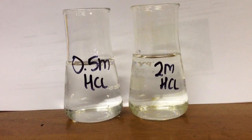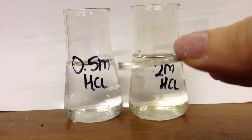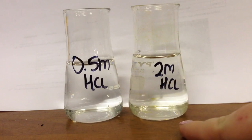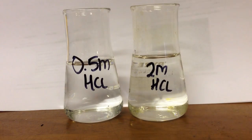So in this video, I'm going to show you the reaction between magnesium ribbon, which I have here, and hydrochloric acid. I have 0.5 molar hydrochloric acid and 2 molar hydrochloric acid. So I just want to show you the differences in reactions between them.